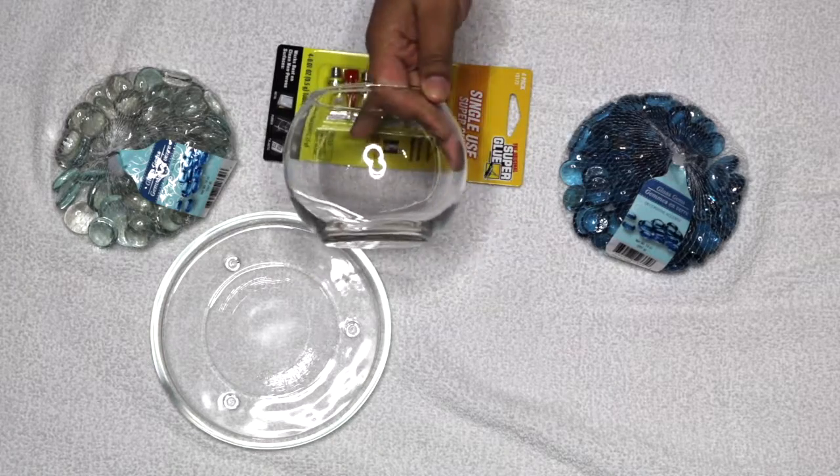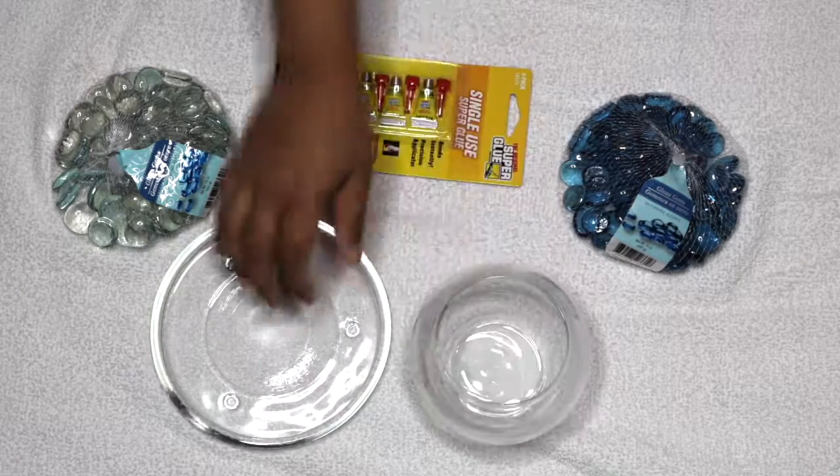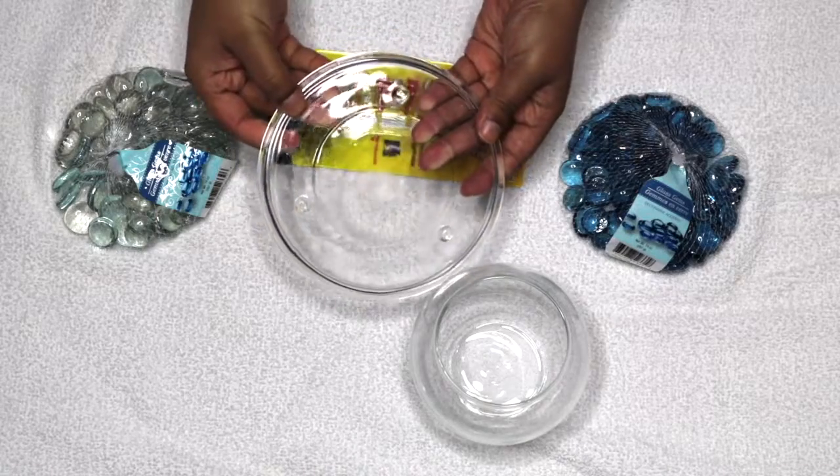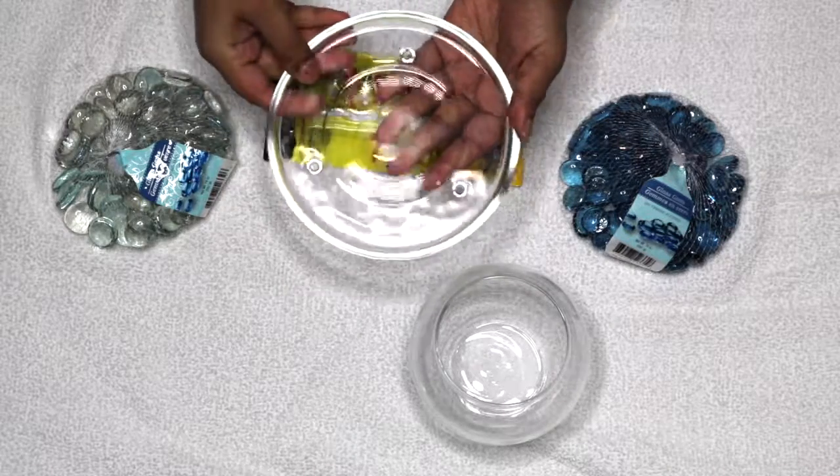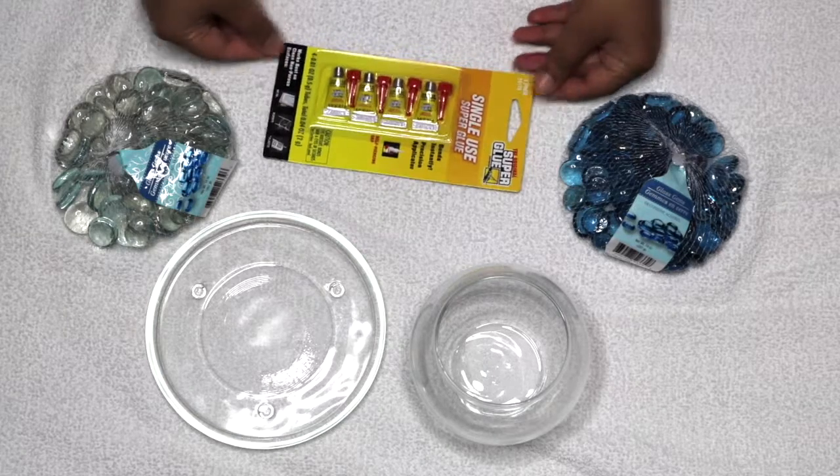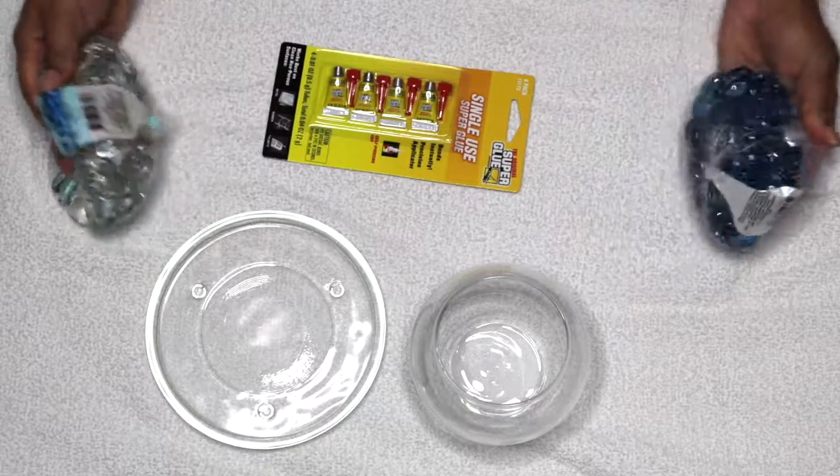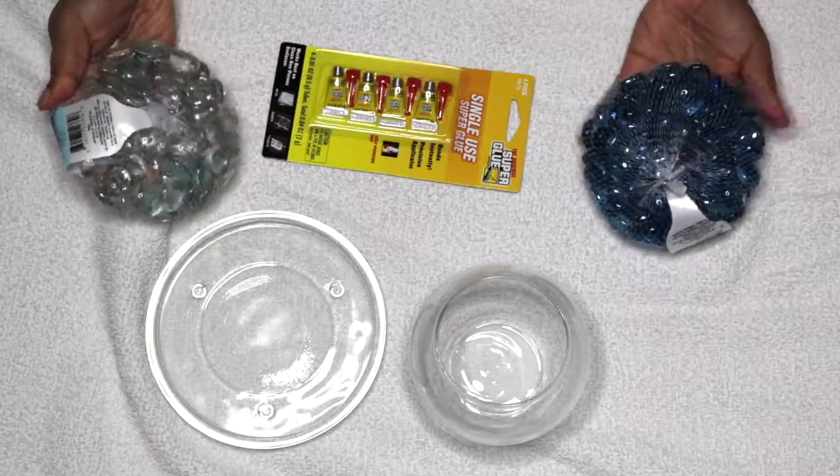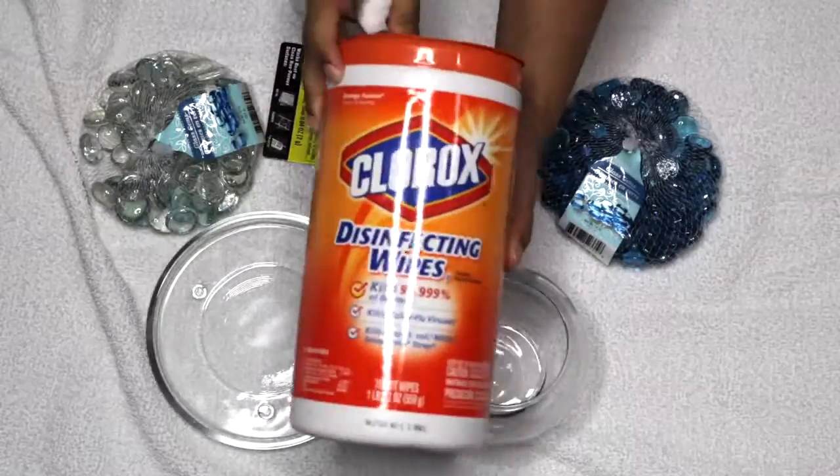You will need this glass bowl which I got from the candle section, a glass candle holder - and by the way, I have already peeled off the stickers off of both of these - you will also need some super glue, and finally, two packs of glass beads. I chose these colors because they matched my living room.